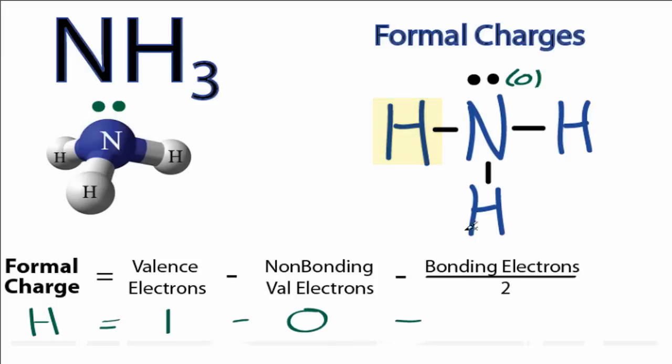And bonding electrons, we have a bond right here that has 2 valence electrons. So 2, and we'll divide that by 2. So 1 minus 0 minus 1 gives us 0.